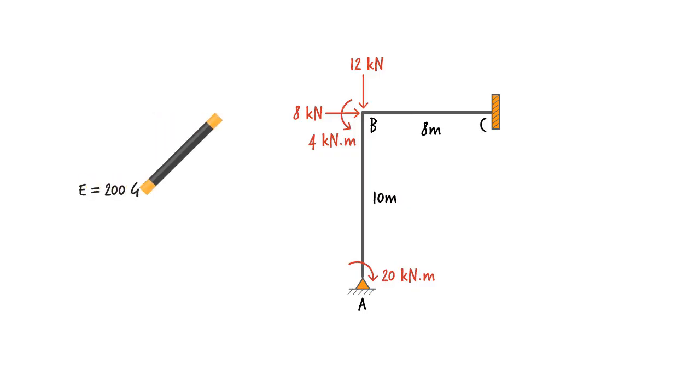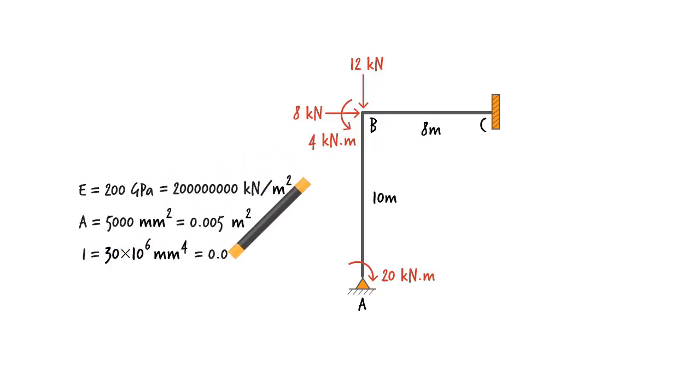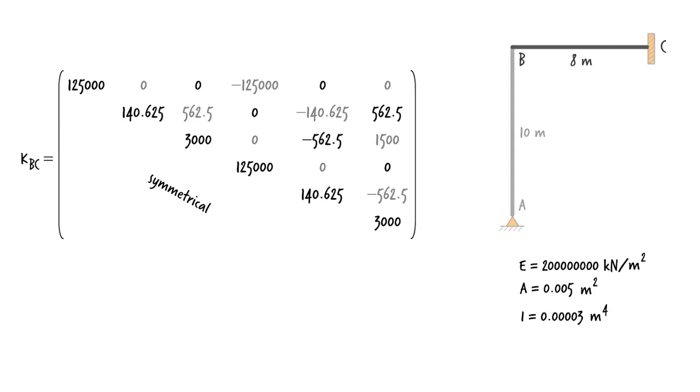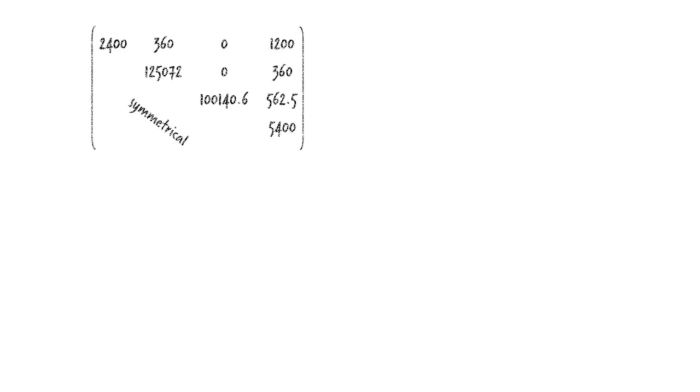Let's assume the following material and section properties for the structural members. This is the same frame that we used in lecture SA49. There we defined the stiffness matrix for member AB. Here it is. And for member BC, we got the stiffness matrix. We also derived the system stiffness matrix for the entire frame. Here is the matrix.